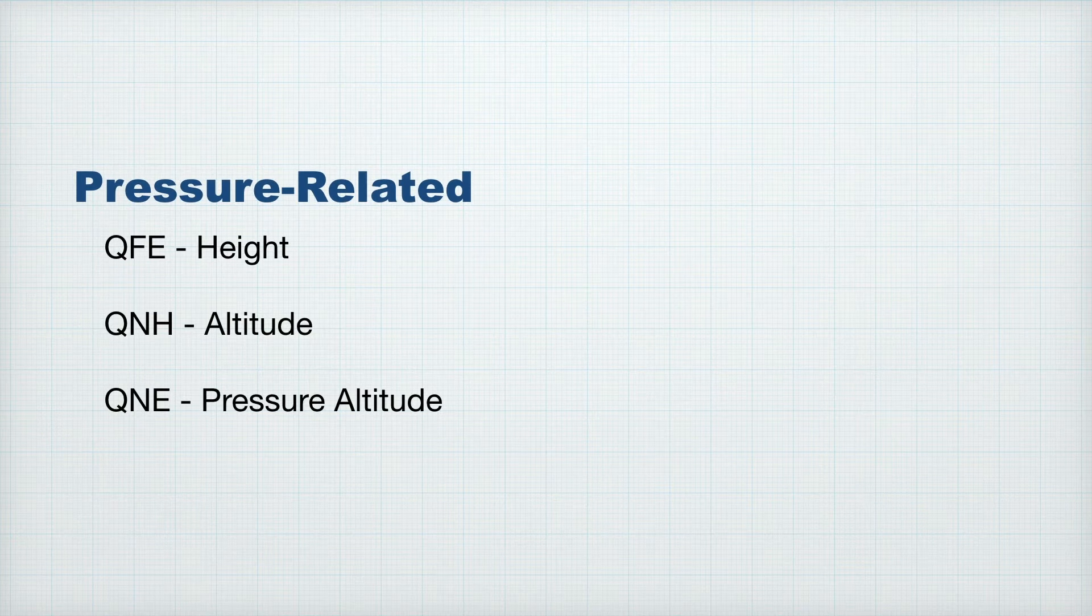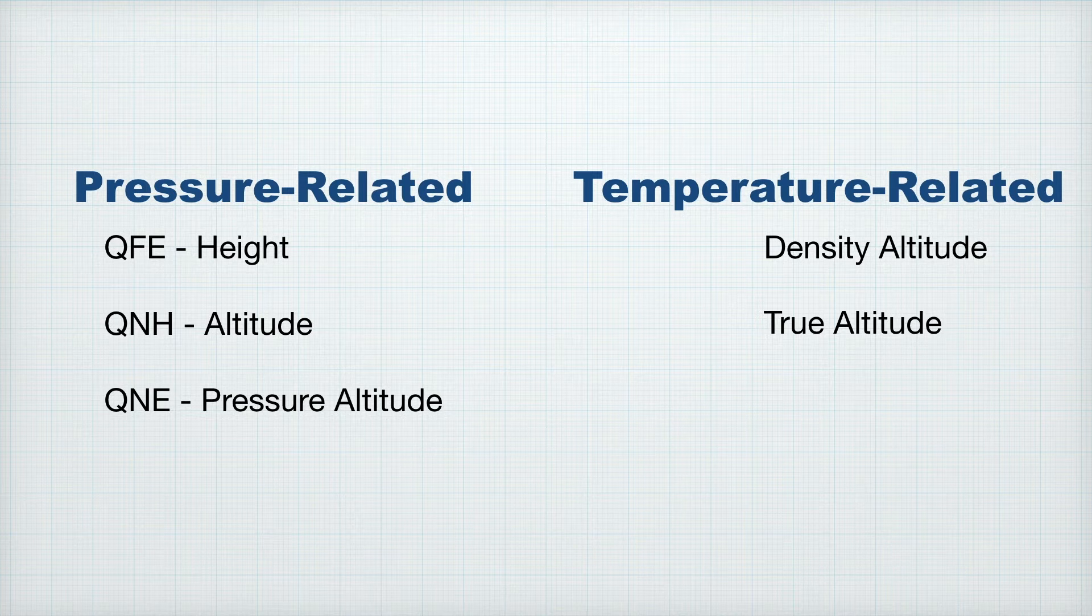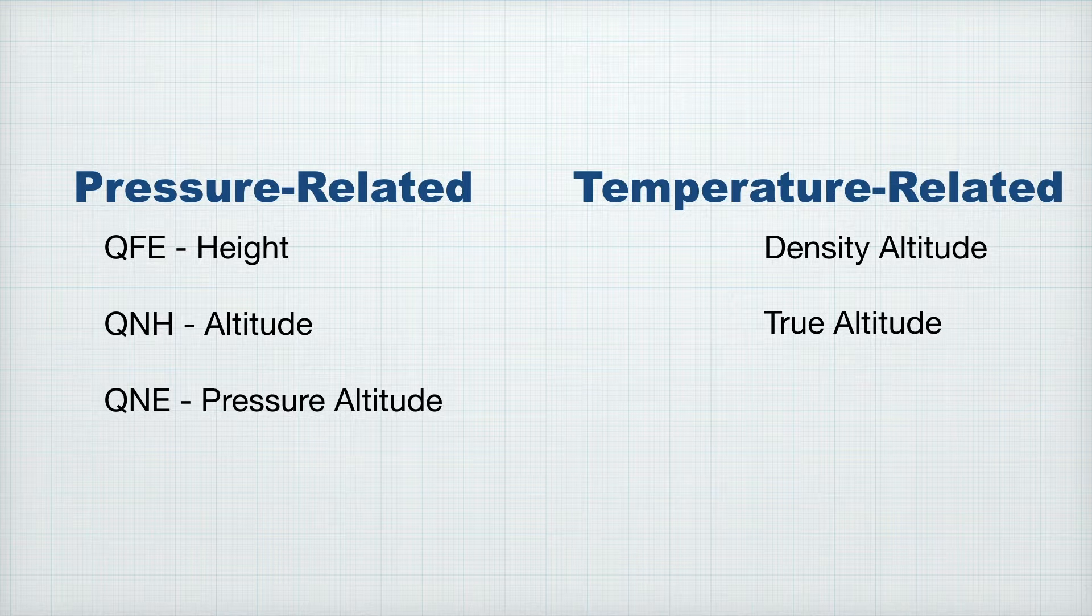We already know that pressure doesn't remain constant. QNH and QFE are adjusted according to the outside pressure. Of course, we know that temperature changes all the time as well. And this is where density altitude and true altitude come in. These are changes to our altitude related to the temperature. Density altitude is mainly used to establish aircraft performance. A high density altitude can mean considerably less performance available to you out of the aircraft's engine. While true altitude is mainly to do with obstacle clearance, and obstacle clearance is important.